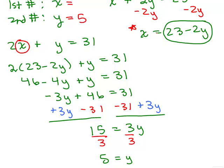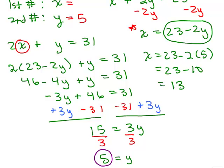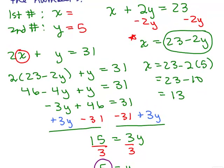Remember where we circled what x was equal to? Now that I know what y is, I'm going to plug that in for y. So I have x equals 23 minus 2 times 5. 23 minus 10 equals 13, and so now I also know the x value.